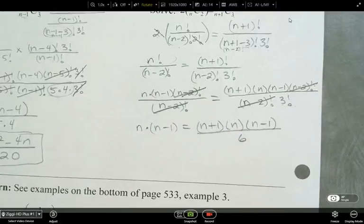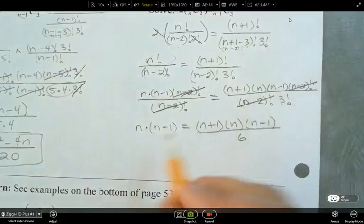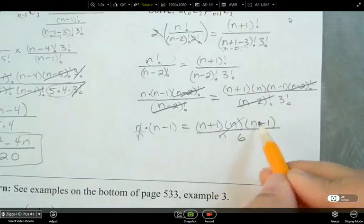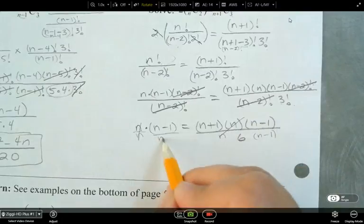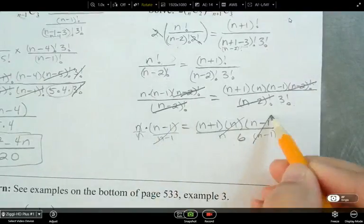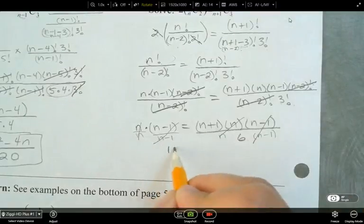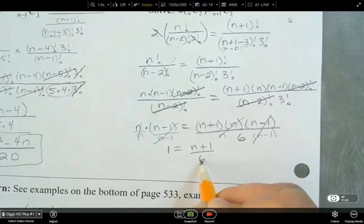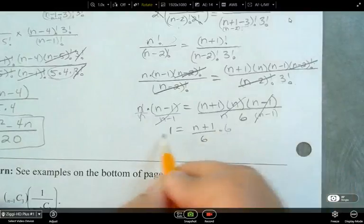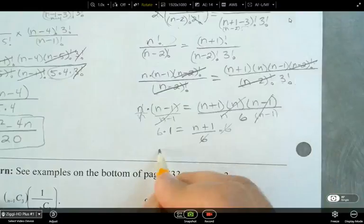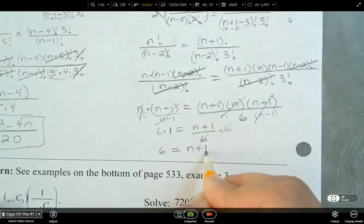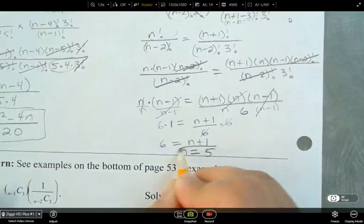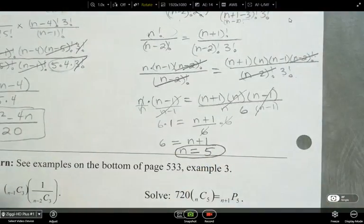So what do you notice that we could do on both sides of those equal signs? If I were to divide both sides by n, what would happen? It would cancel there. And how about here? If I divided both sides by n minus 1, what happens here? Those cancel, right? So what am I actually left with? So we get 1 equals n plus 1 over 6. And then how do I continue? Multiply both sides by 6. And we end up getting 6 equals n plus 1. So my final answer is n is equal to 5.